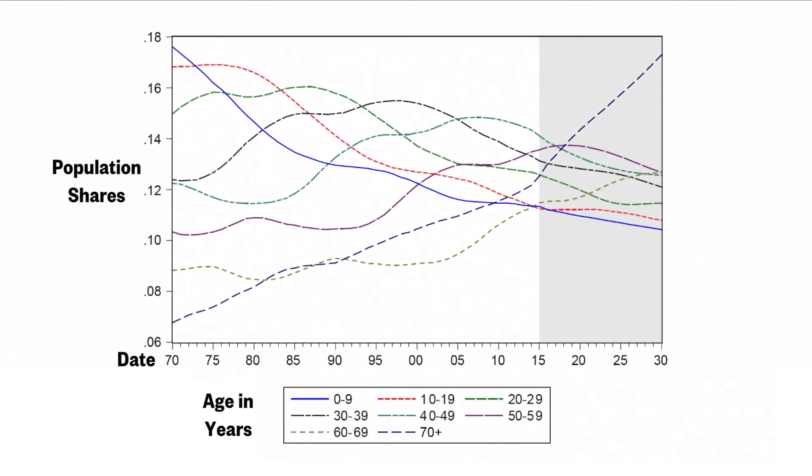We provide two theoretical channels to explain the data and our estimates. First, when people expect to live longer, they need to save more for their retirement and consume less. This increases their demand for assets and, in turn, leads to a decline in asset returns, explaining the decline in long-term growth and real interest rates.